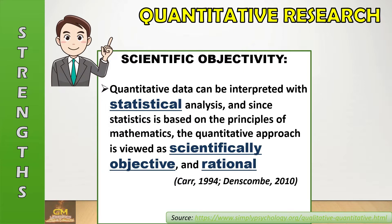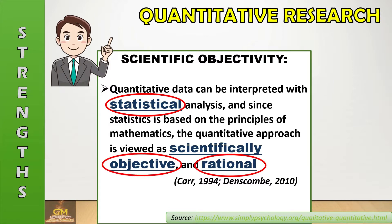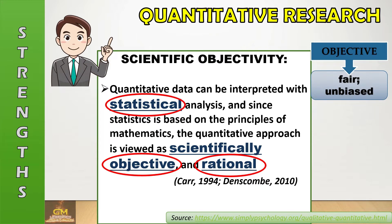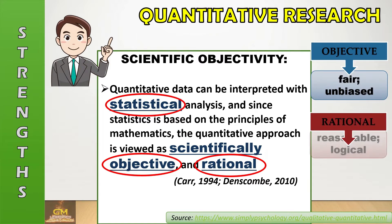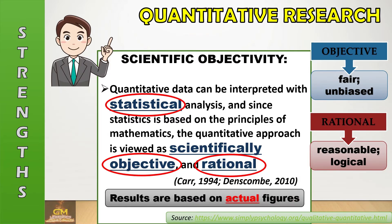This is according to Carr in 1994 and Denscombe in 2010. Quantitative research is always associated with statistical analysis because it involves numeric data, numeric figures, and different statistical treatments used to interpret data and come up with results and conclusions. Objective in the simplest description means fair or unbiased, while rational means reasonable and logical. The main reason why quantitative research is considered scientifically objective and rational is because the results are based on actual figures — meaning there is numeric evidence based on the results of a particular study.